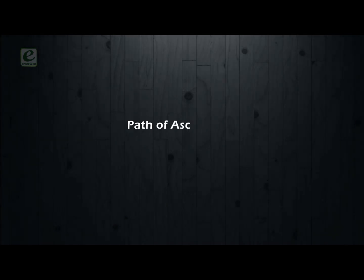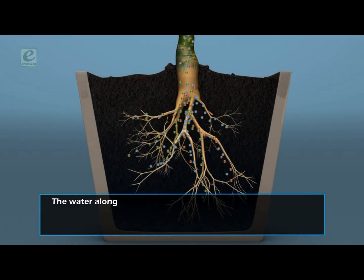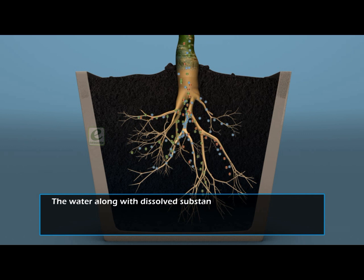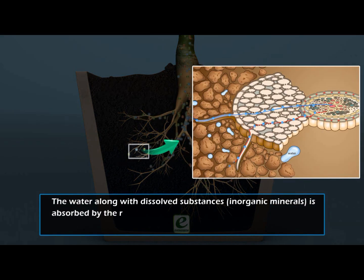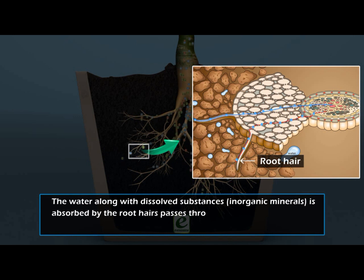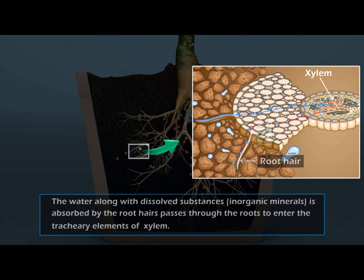Path of Ascent of Sap. Water along with dissolved substances — inorganic minerals — is absorbed by the root hairs and passes through the roots to enter the tracheary elements of xylem.